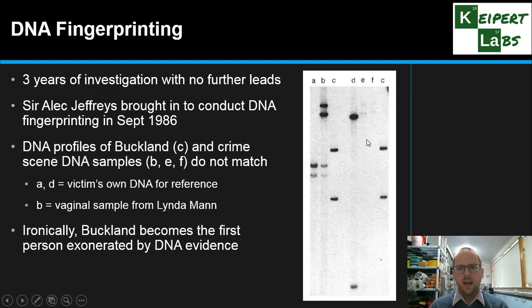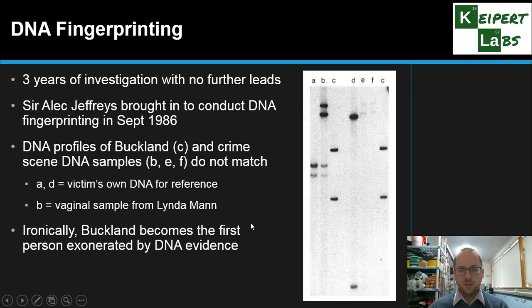Samples E and F are faint but also show no correlation to Richard Buckland's sample. So even though he was the first suspect who was attempted to be convicted using this evidence — and all this came about just before his trial — he was actually the first person exonerated using DNA fingerprinting, showing that it could not have been him.